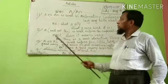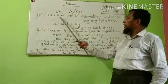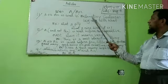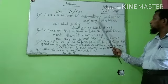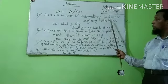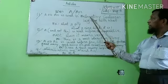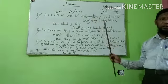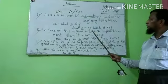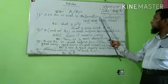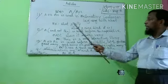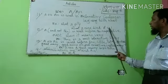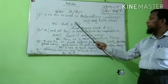Number ten: A or AN is used to indicate a class as a whole. Example: The cow has horns. Number eleven: A or AN is used in an exclamatory sentence beginning with 'what'. Example: What a pity! What a nice day!